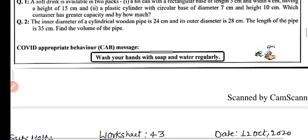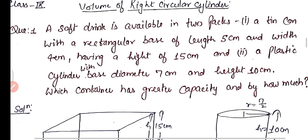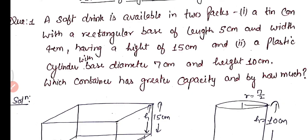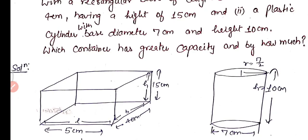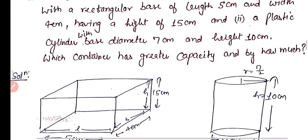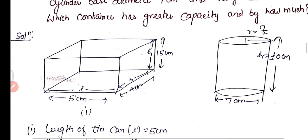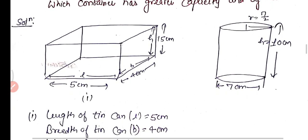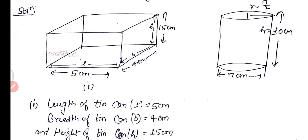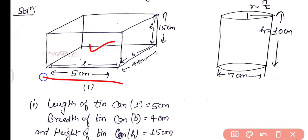Now we have two practice questions. Question 1: A soft drink is available in two packs — a tin can with a rectangular base of length 5 cm, width 4 cm, and height 15 cm; and a plastic cylinder with base diameter 7 cm and height 10 cm. Which container has greater capacity and by how much? We have one cuboidal pack and one cylindrical pack and need to find which has greater capacity.